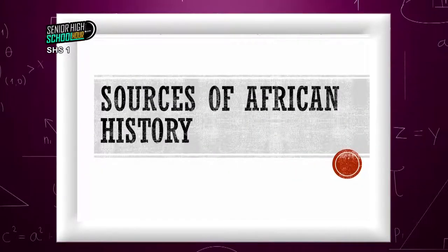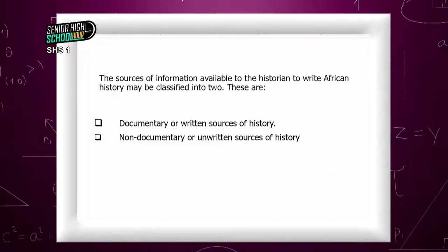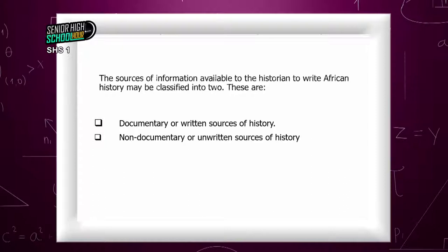To be able to write and enjoy history, there are sources that one has to tap information from. Without that, we don't have history; without that, we can never reconstruct our past. The sources of information available to the historian to write African history may be classified into two: documentary or written sources of history, and non-documentary or unwritten sources of history. These are the two sources one can tap historical information from.